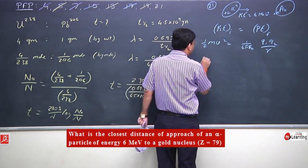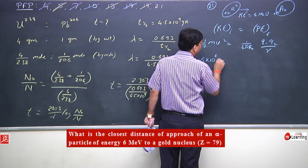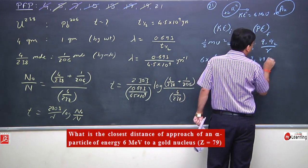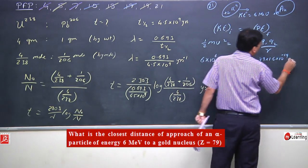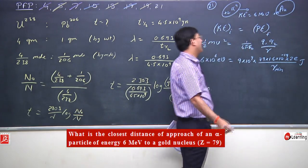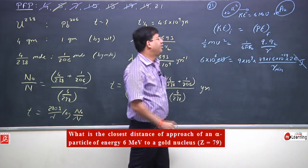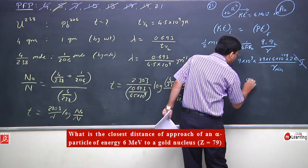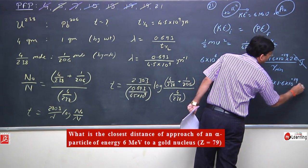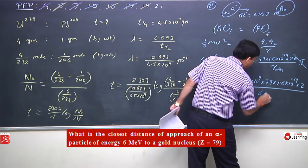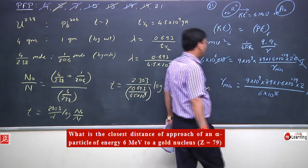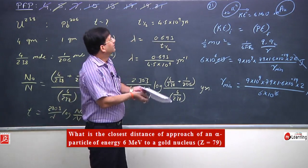r is the distance of closest approach. Substituting: 6 into 10⁶ eV = 9 into 10⁹ into 79 into 1.6 into 10⁻¹⁹ into 2e, divided by r. The electron volt and e cancel. Minimum distance r = [9 into 10⁹ into 79 into 1.6 into 10⁻¹⁹ into 2] / [6 into 10⁶] meters. This is the closest distance of approach.